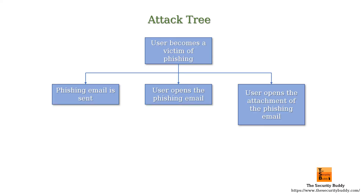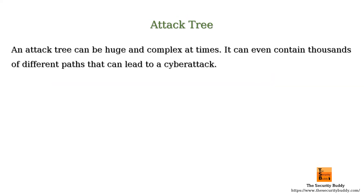For example, let's say the condition of the parent node is a user becomes a victim of phishing. The parent node has three child nodes. One of the child nodes indicates the condition a phishing email is sent, the second one indicates the condition the user opens a phishing email, and the other child node indicates the condition the user clicks on the attachment of the phishing email. Here, all the conditions of the child nodes must be true to satisfy the parent node. Hence, the child nodes here are AND nodes.